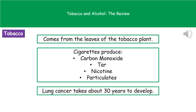Welcome to our review on tobacco and alcohol. First, we're going to consider tobacco. Tobacco itself comes from the leaves of the tobacco plant and it's used these days in the production of a whole range of different products — cigarettes, cigars, the tobacco you put in pipes, etc.